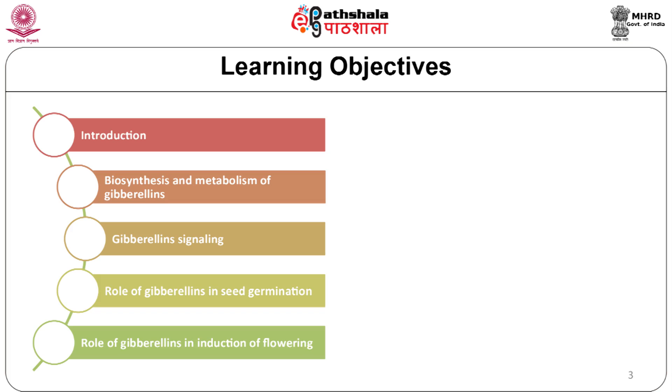In this module, let's study how gibberellins are formed by plants and how they act at the molecular level in order to regulate plant growth and development. The learning objectives of this module are: the roles of gibberellin, dwarf mutants, gibberellin biosynthesis, and the signaling pathway.